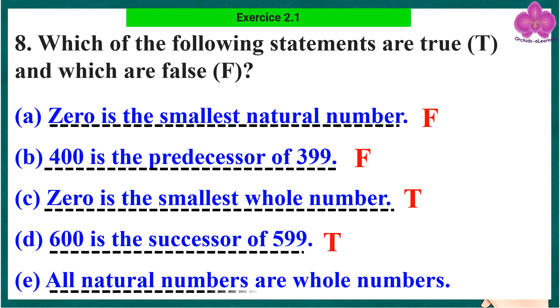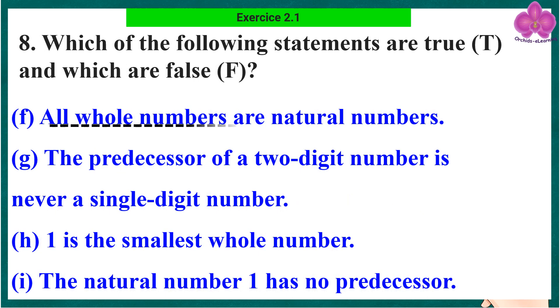Statement k: All natural numbers are whole numbers. True. Statement l: All whole numbers are natural numbers. False. Statement m: The predecessor of a two-digit number is never a single-digit number. False.